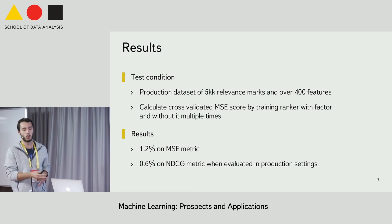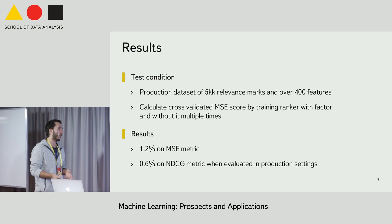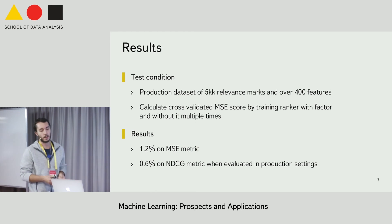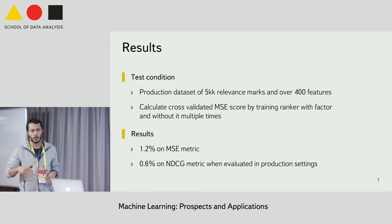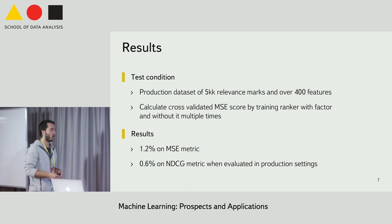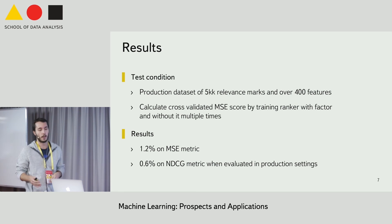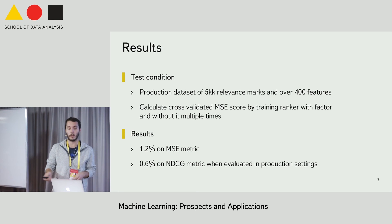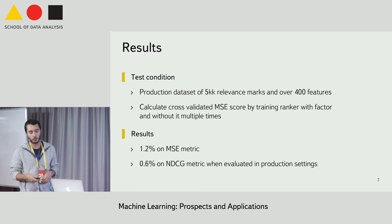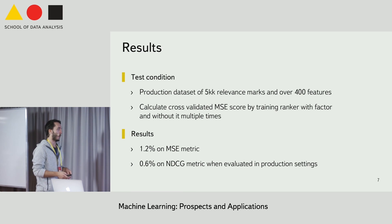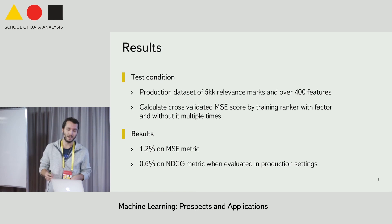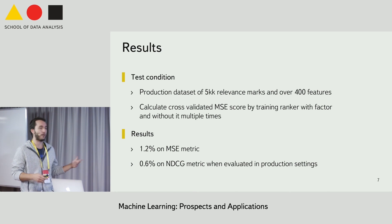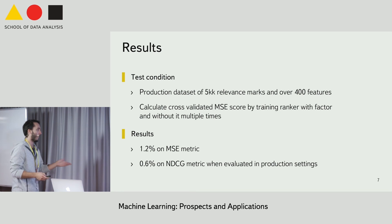On each training part we trained the ranker twice — with the distance feature and without it — and then computed mean squared error on the test part. We used statistical testing to validate that the MSE result is significant. The result was a large decrease in MSE error — around 1%, which is considered huge by our standards.